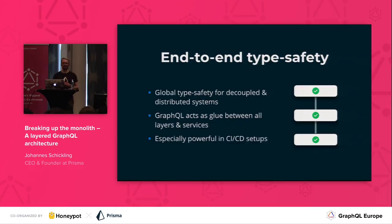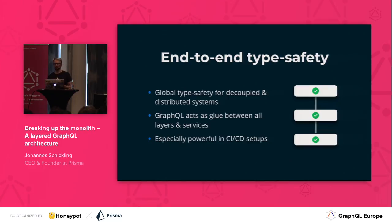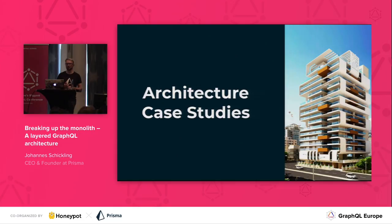The part I'm most excited about is that this really enables you to end up with a system that, even though it's decoupled and distributed, you can still accomplish end-to-end type safety. So from your front-end all the way to your database, everything is type-safe — which provides a great developer experience and catches so many problems right at build time. That paired with a great CI/CD setup really provides a lot of benefits.